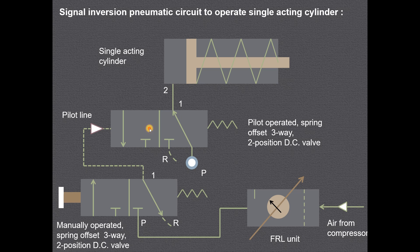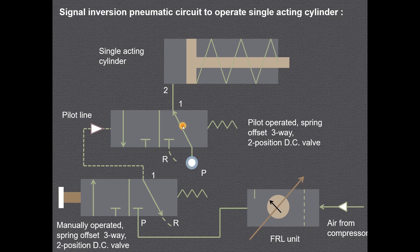In the first position, air from the compressor enters into the filter regulator and lubricator unit, then enters the pressure port where it is blocked and nothing happens. Since the first valve is in the off position, the pilot line is not operated. However, the pressure port P is now connected and from port 1 the air enters into port 2, acting on the cylinder side of the piston and causing the forward motion of the piston.